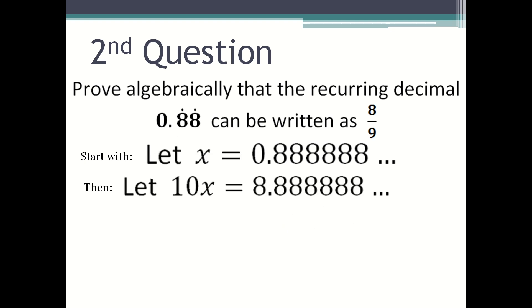Then you put let 10x be equal to 8.8 recurring with the dots at the end. Rearrange it so that the bigger x is on top, so it will be 10x is equal to 8.8 recurring, and then x on the bottom will be 0.8 recurring.